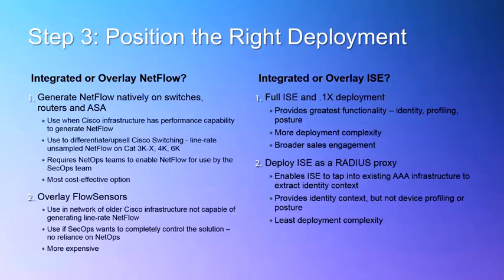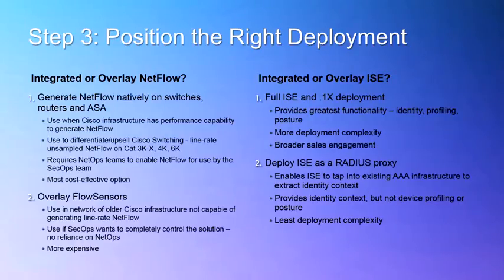The overlay solution places flow sensors at strategic locations in order to capture packet level data and create NetFlow. This is the more expensive of the two options, but it does allow for StealthWatch deployment where NetFlow cannot traditionally be delivered or where the security team would prefer complete control of the solution. Just as with NetFlow, ICE can be deployed in an integrated or overlay method. As an integrated solution, ICE can provide identity and profiling data as well as easily create network policies that can be enforced through TrustSec. While this is the more complex of the two deployment methods, it offers a much deeper integration with the customer's network. In an overlay deployment, using ICE as a radius proxy, ICE taps into the customer's current AAA infrastructure to extract identity data. This is not the preferred deployment model, as ICE is not able to provide profile data, but only identity data.